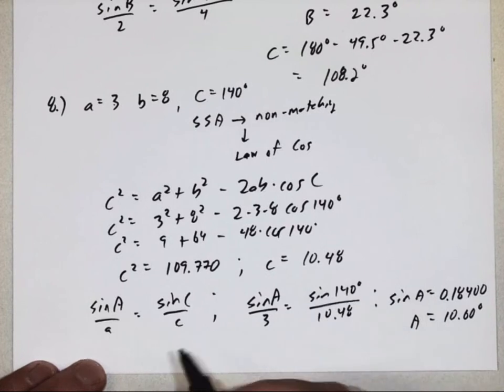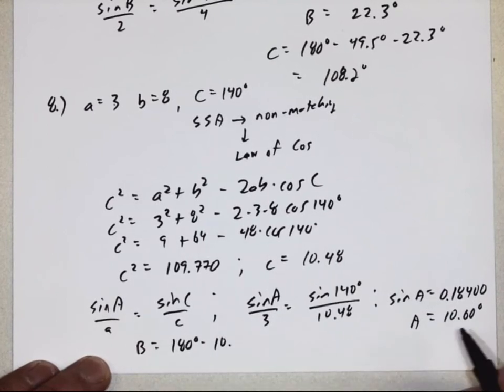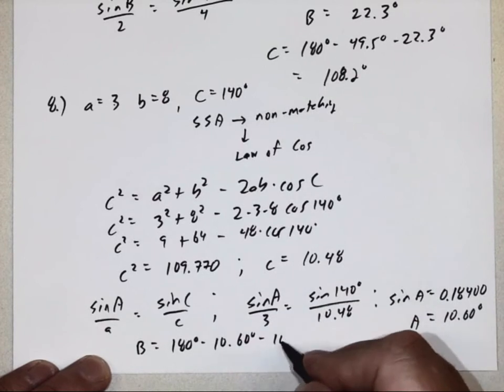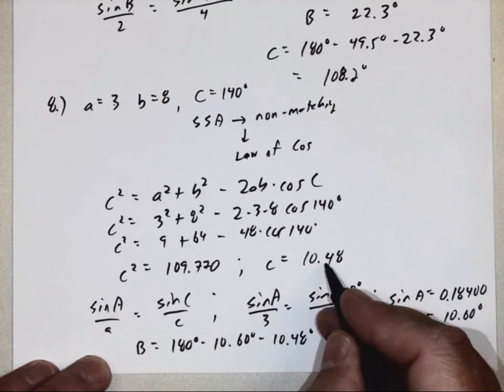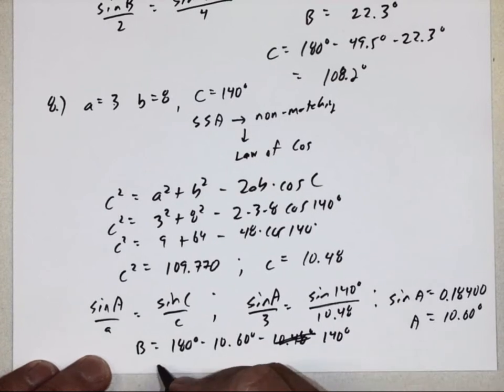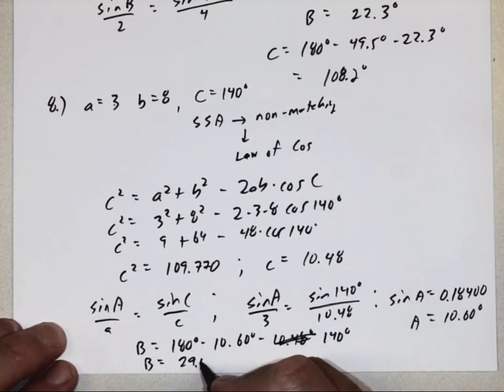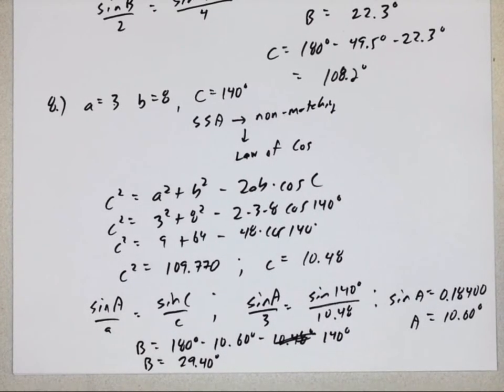So now I can figure out angle B since I know the other two angles. 180 degrees minus angle A which is 10.6 degrees minus angle C. Oops, that's the length. Angle C is 140 degrees. So angle B should be 29.40 degrees. Alright, so that was lots of problems using laws of sines and cosines. Hopefully you can keep them all straight. Be careful with your math. They aren't too difficult.